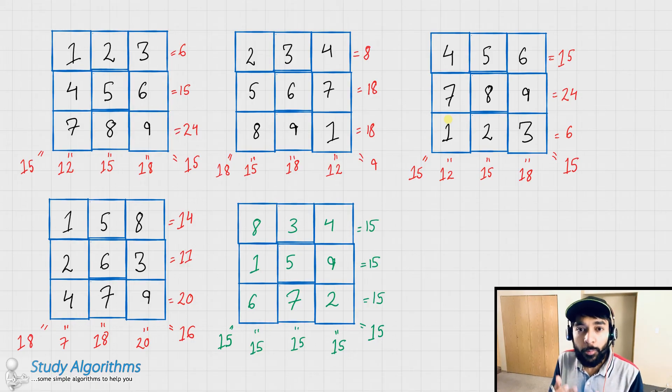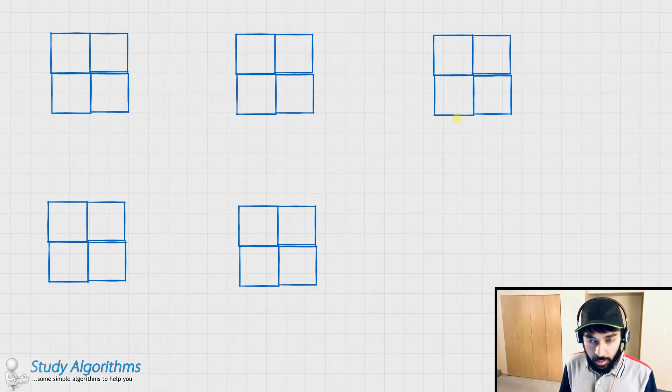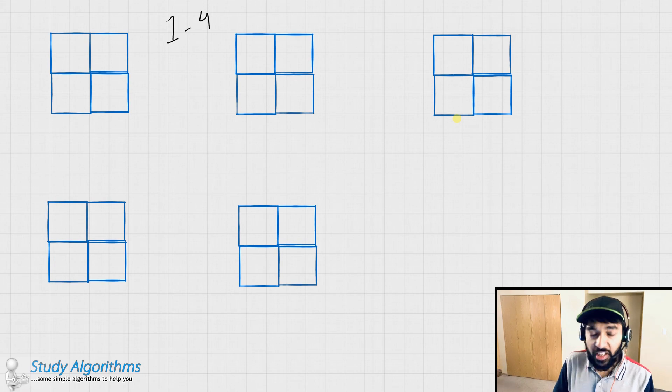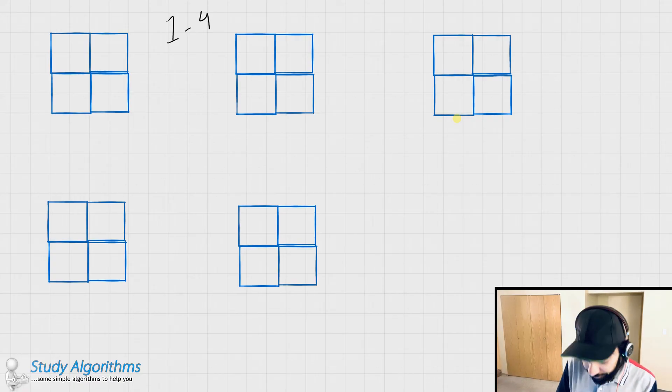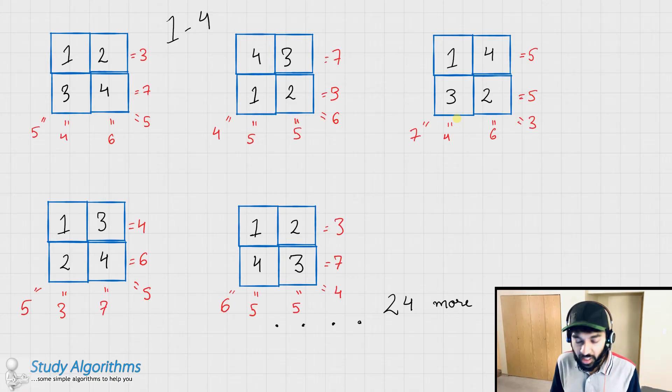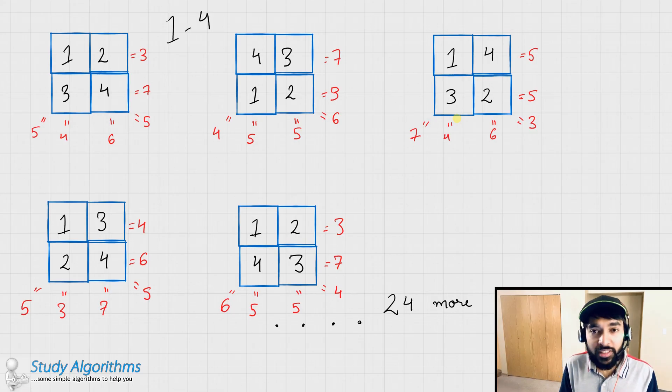But you were able to arrive at this solution because a solution to this problem existed. Let me take up an example of a problem to which a solution does not exist. So instead of a 3 by 3 magic square, this time I have a 2 by 2 magic square, and I am required to fill in numbers from 1 to 4, such that sum of all rows, columns, and diagonals are the same. No matter how many combinations I try, I would never reach an answer.